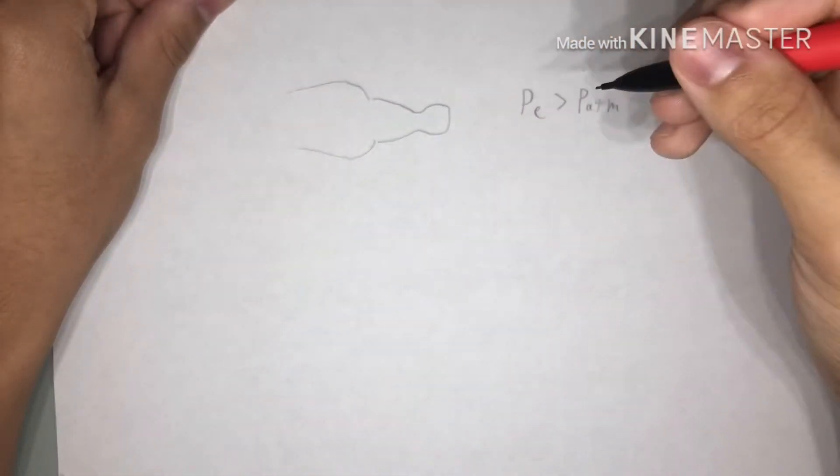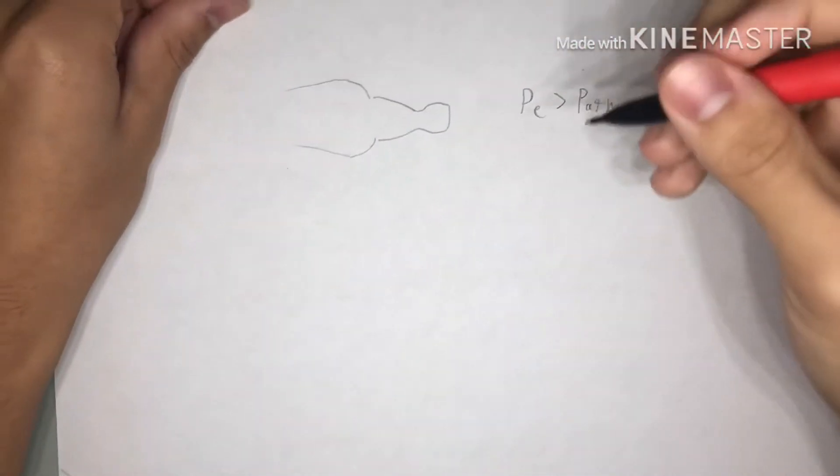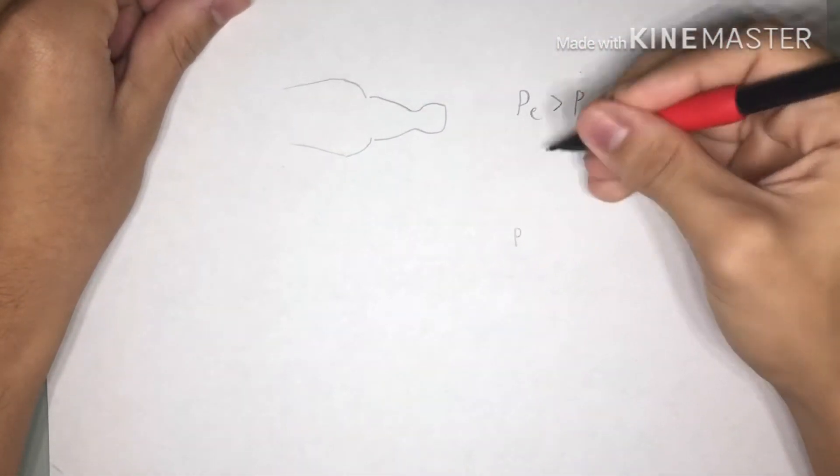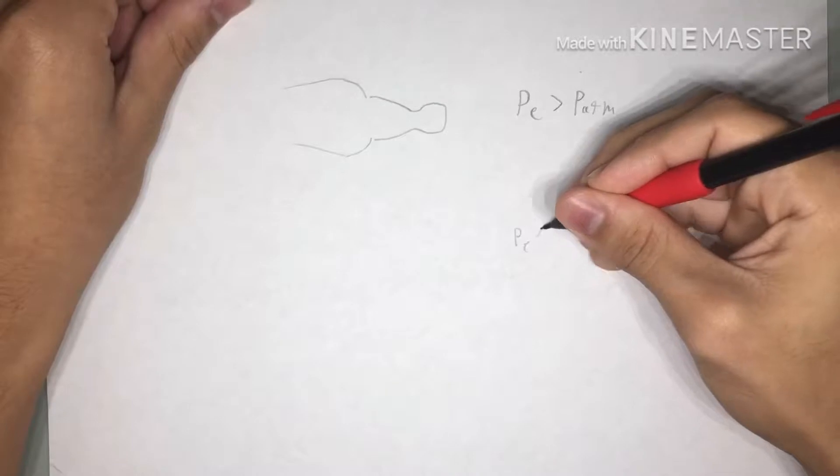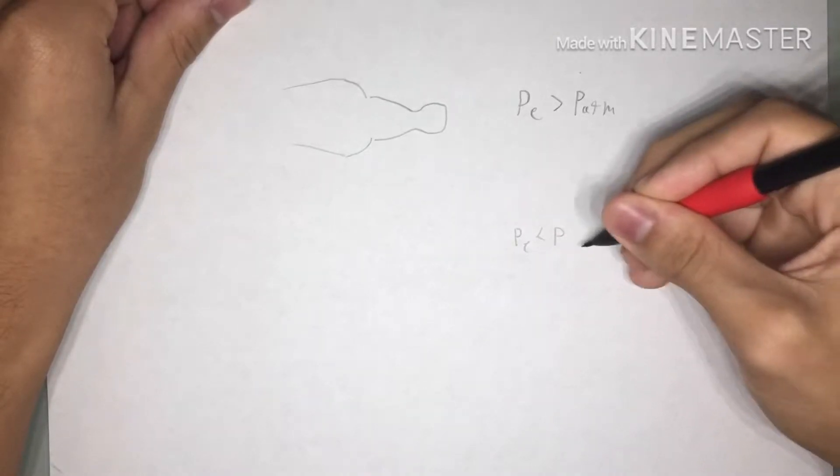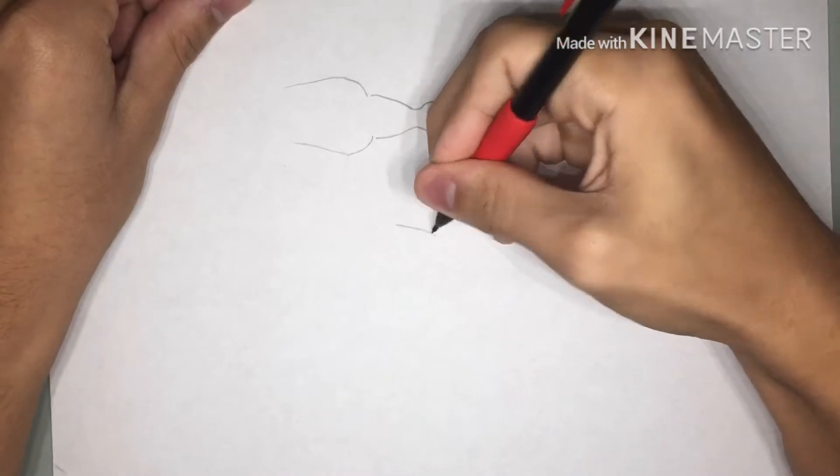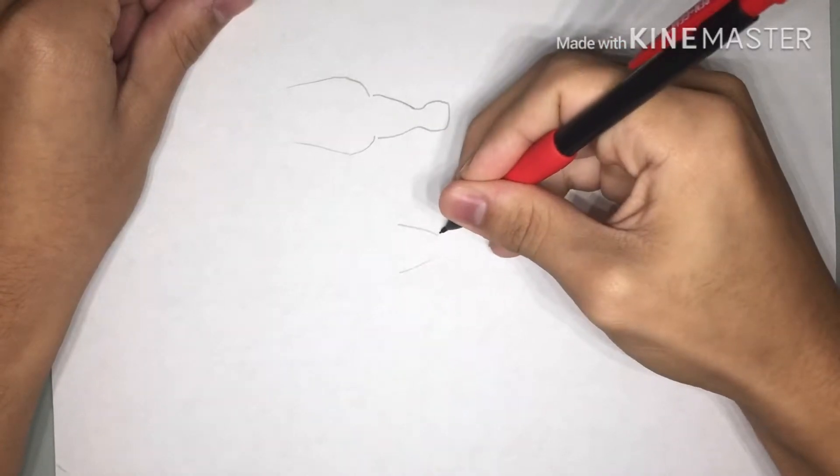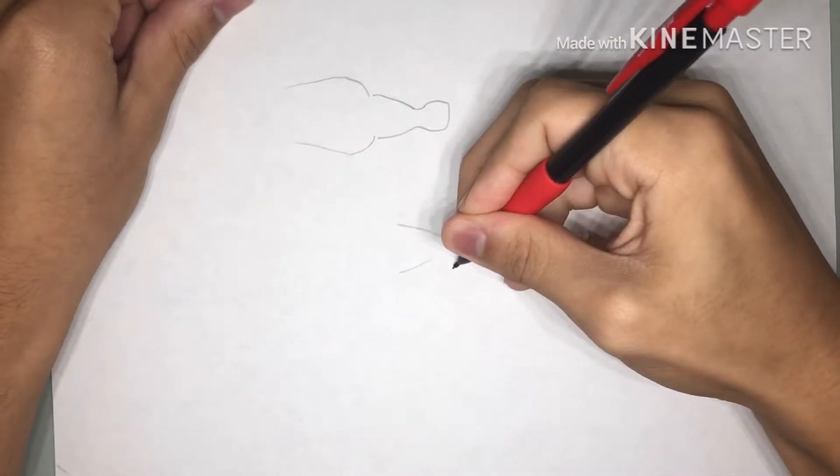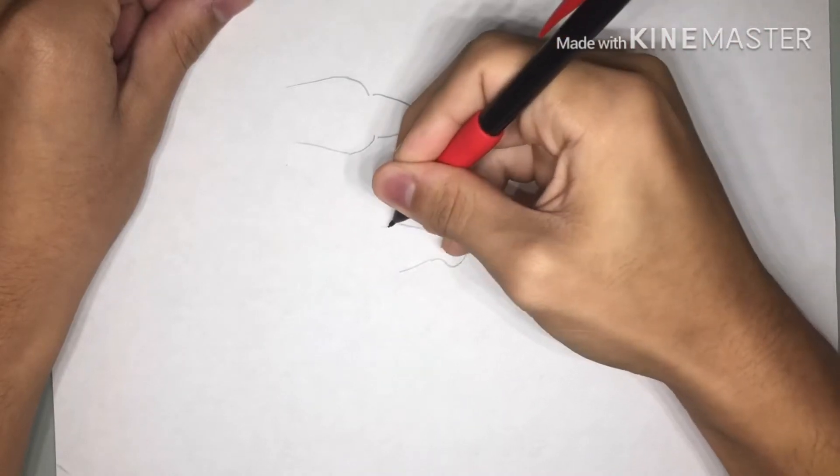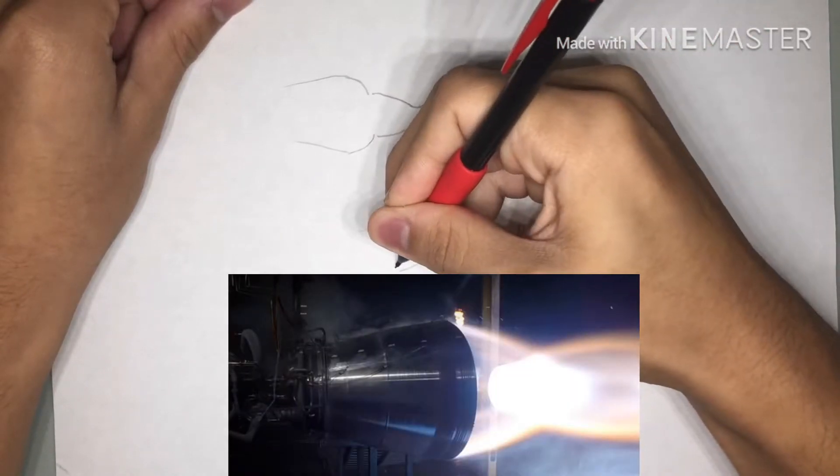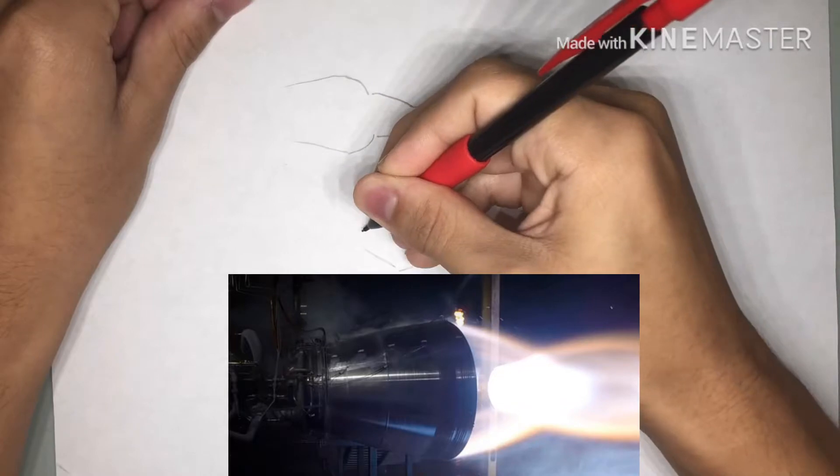But in an overexpanded rocket nozzle, it will be the same thing as here, except it will be less than P ATM, causing it to look a little something like this. Getting pushed down, and this can result in mock diamonds, which I have a video about.